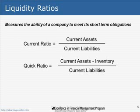The first group are liquidity ratios, which measure a company's ability to meet its short-term obligations. Two ratios that come up often are the current ratio and the quick ratio, sometimes called the acid test ratio. The current ratio is current assets divided by current liabilities. The quick ratio subtracts out less liquid assets such as inventory — for example, slow-moving inventory like automobiles at a car dealership.